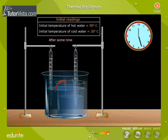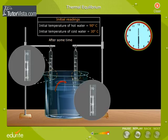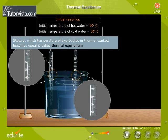Now record the temperature of both thermometers after some time. Both thermometers show the same reading, indicating that there is no transfer of heat. The state at which temperature of two bodies in thermal contact becomes equal is called thermal equilibrium.